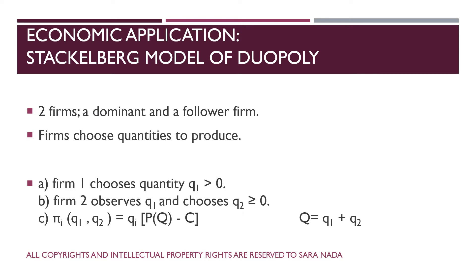The dominant firm will move first, and the follower firm will move second. So the dominant firm will choose the quantity to produce first, then the follower will observe the quantity produced by firm 1 and choose its quantity in the second stage of the game. We will assume that the dominant firm is firm 1 — the firm that moves first — and the follower is firm 2, which moves at the second stage.